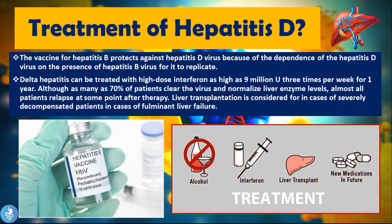The vaccine for hepatitis B actually protects against the hepatitis D virus, because of HDV's dependence on HBV to replicate — so it is really important to get vaccinated for hepatitis B. Hepatitis D can be treated with high-dose interferon, as high as 9 million units three times per week for one year. Although as many as 70% of patients clear the virus and normalize enzyme levels, almost all patients relapse at some point after therapy.